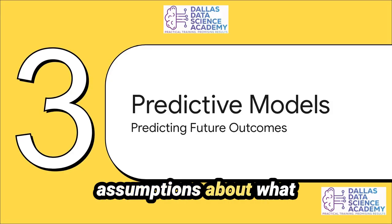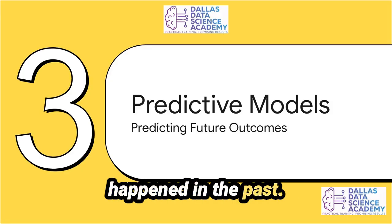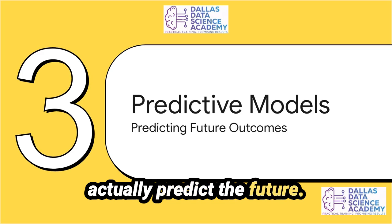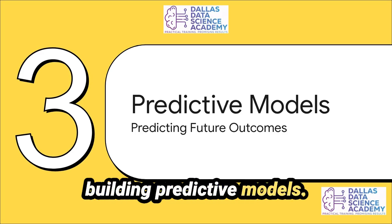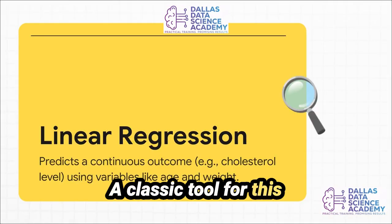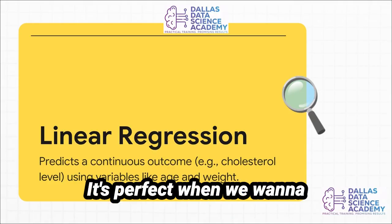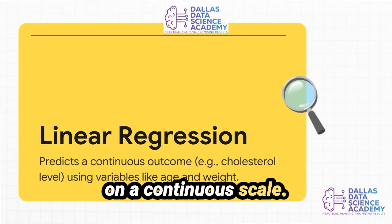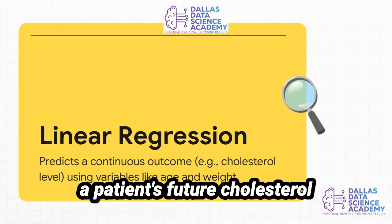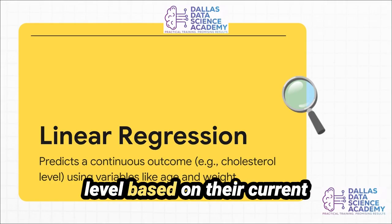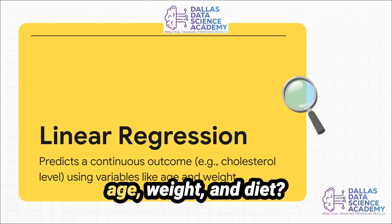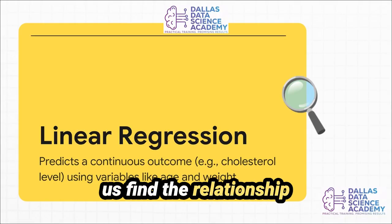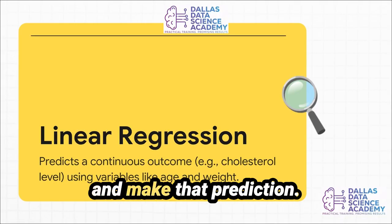Now let's use what we've learned to predict the future. This is where we start building predictive models. A classic tool for this is linear regression — it's perfect when we want to predict a specific number on a continuous scale. For instance, can we predict a patient's future cholesterol level based on their current age, weight, and diet? Linear regression helps us find the relationship between those factors and make that prediction.